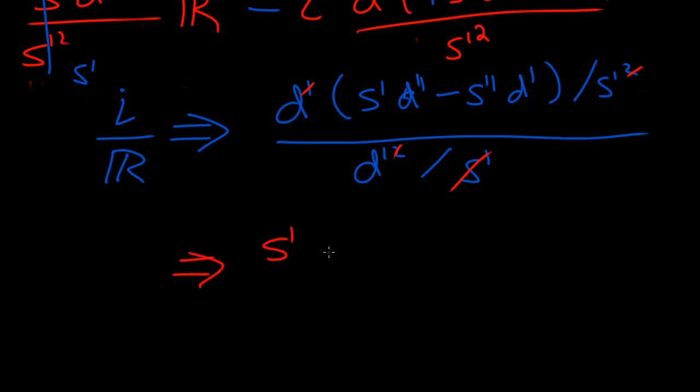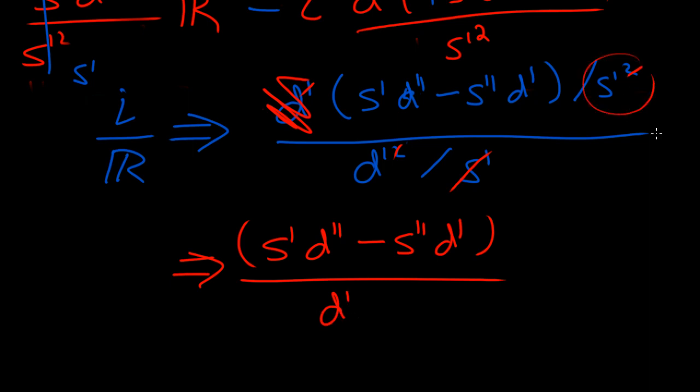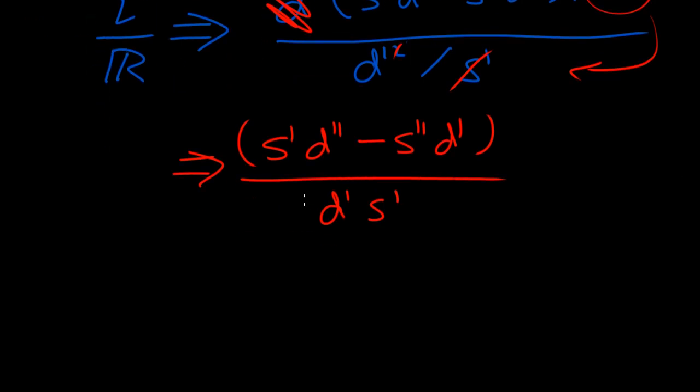So what are we left with here? We're left with S prime, D double prime, minus S double prime, D prime, divided by D prime, and this one goes on the bottom, so S prime. So this is the relationship which we have, which we can sort of simplify even more, by splitting the equations.